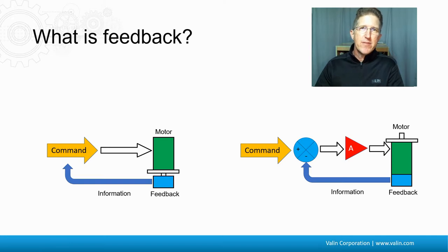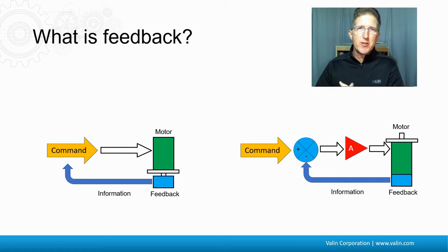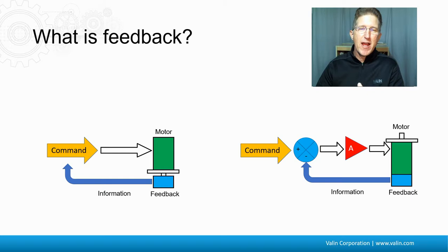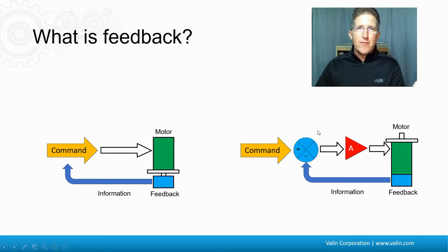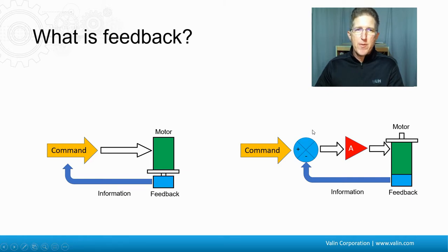If we had a positive there where the information is coming back, they would just add together, and that would be a feedback loop — just picture a screeching microphone where it gets out of control. So that's why we subtract that feedback. That's really the basics of feedback. There are a lot of different kinds, but that's just the basics for the moment.